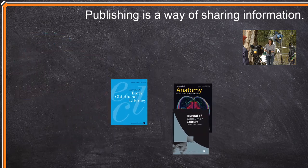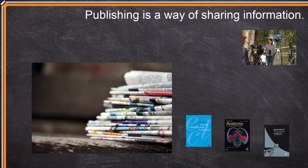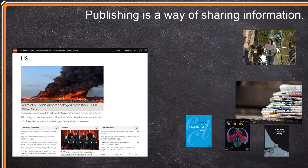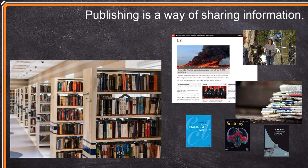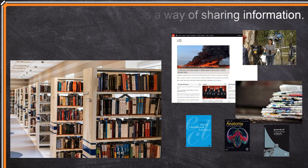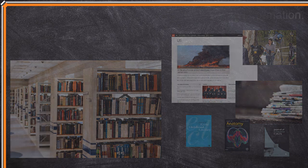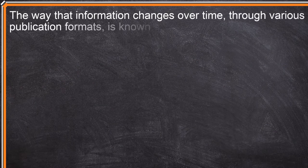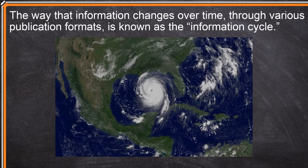Different types of publications have different audiences and different deadlines. Because of this, publications vary in terms of depth and breadth of coverage, as well as the amount of time publishers give authors to gather and review facts. The way that information changes over time through different publication formats is known as the information cycle.